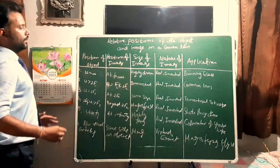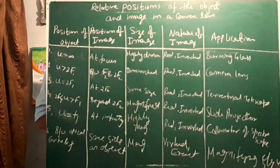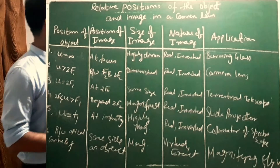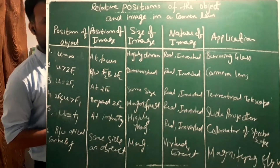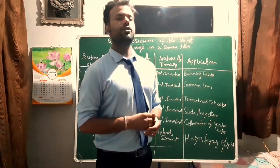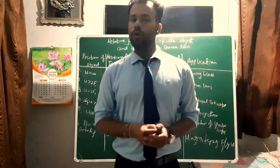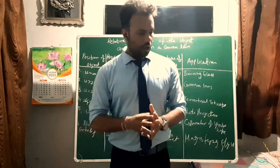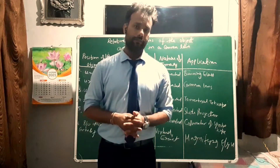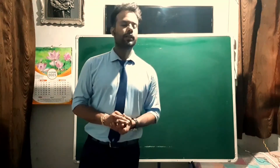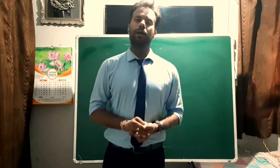This table is also in your book — make a note of it. It is a very important table, because by this table you will understand and remember the respective positions of the images with respect to the position of the objects. Now let's move to image formation by concave lenses.